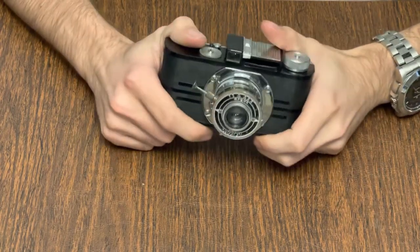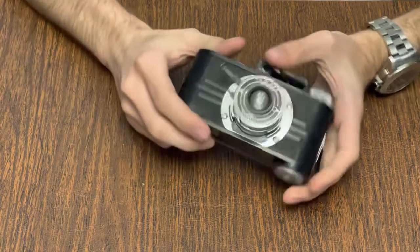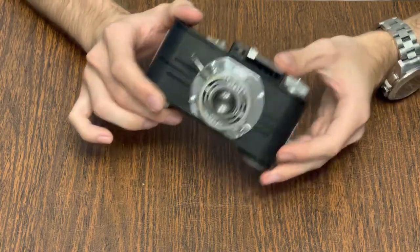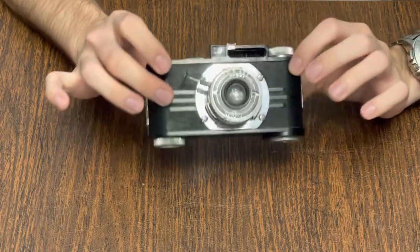Hi and welcome to the camera compendium. Today I'll be taking a look at the Argus A2F. The Argus A2F was manufactured from 1939 to 1941 by Argus Incorporated in Ann Arbor, Michigan.